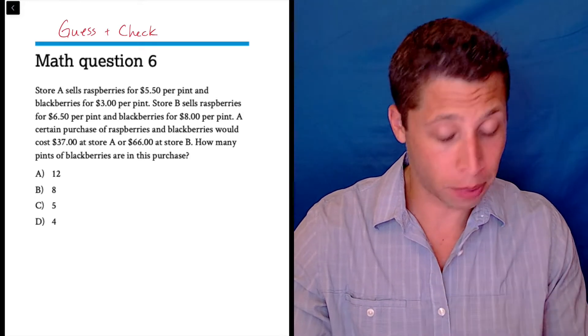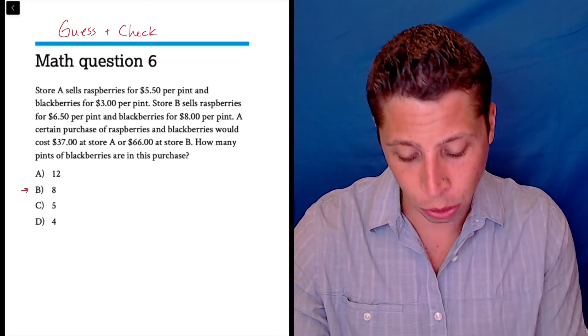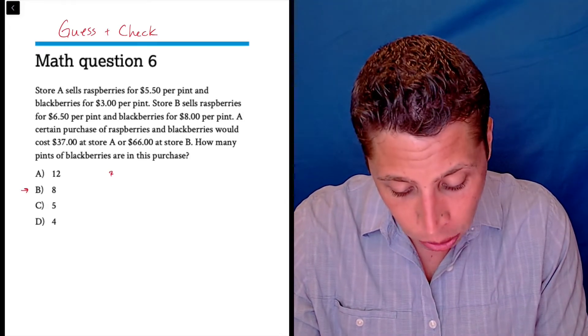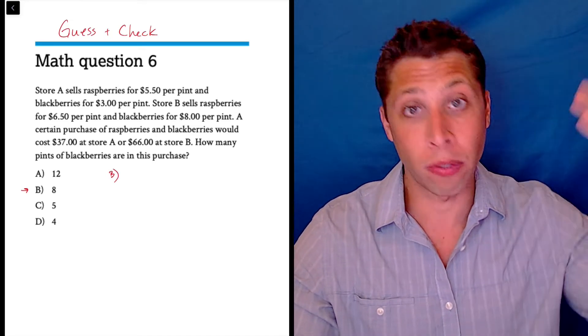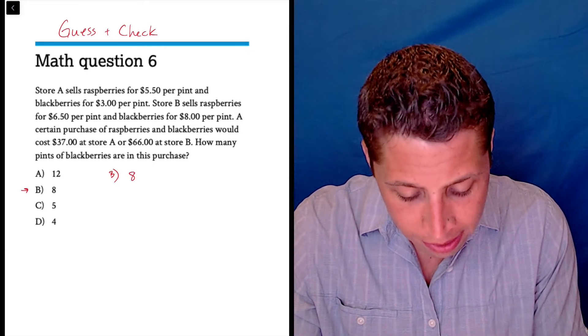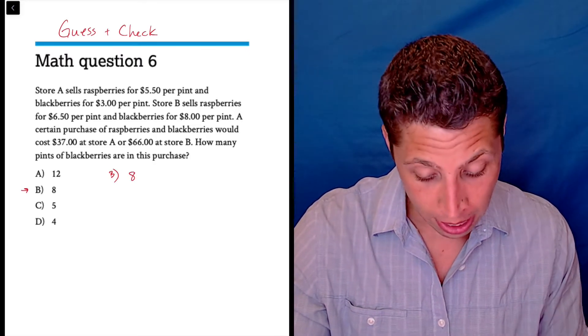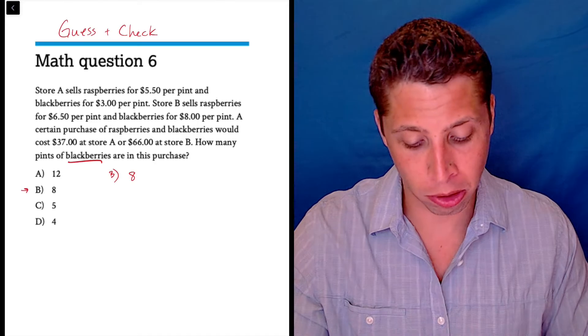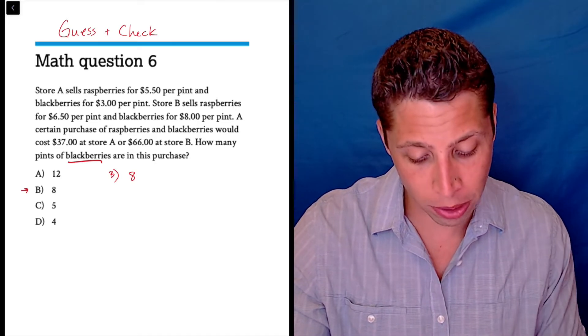So what I would do if I'm going to guess and check, first of all, I just gravitate towards choice B. I don't know why, it's just the one I like. And if it's wrong, I can kind of adjust. I can go for a bigger number or a smaller number depending on what's going on. So B is eight. Eight what? How many pints of blackberries are in this purchase? Okay, so let's scan the question now. What do we know with the blackberries?